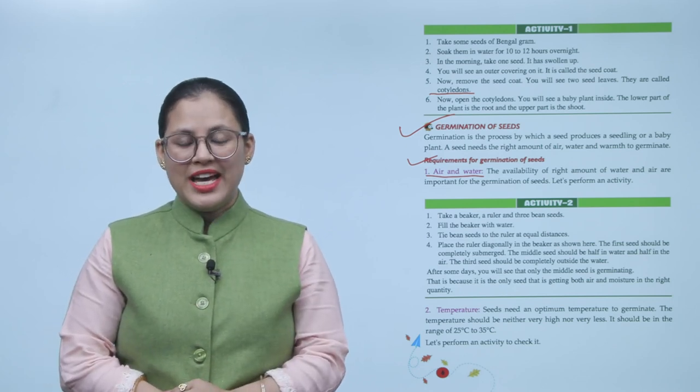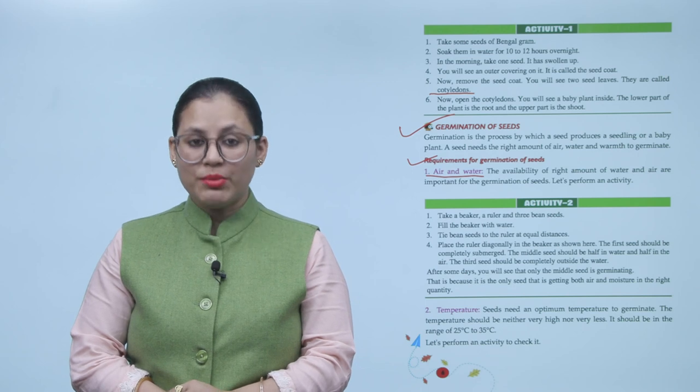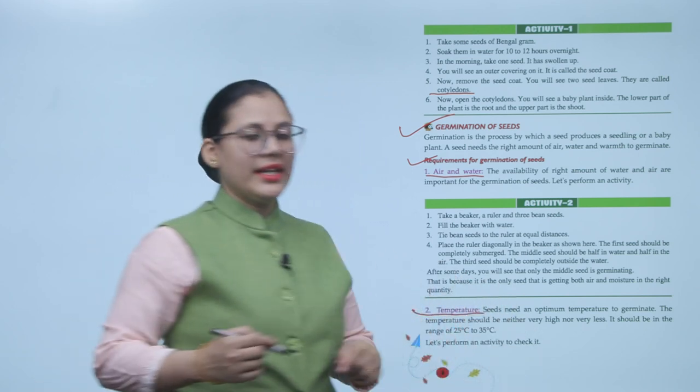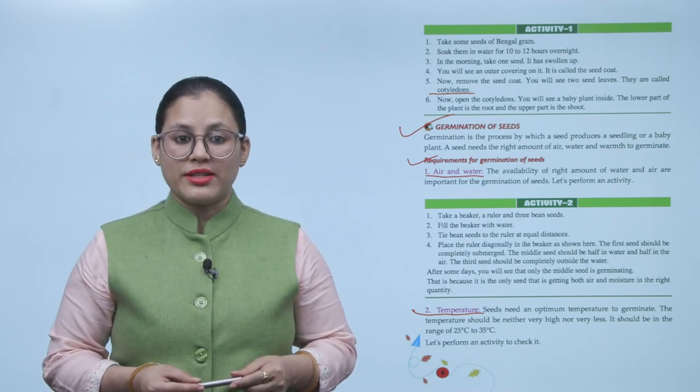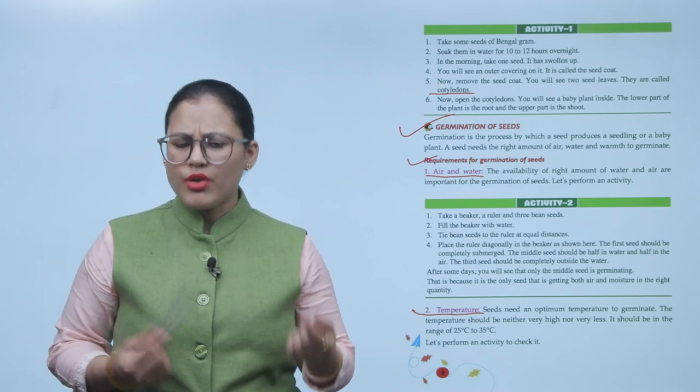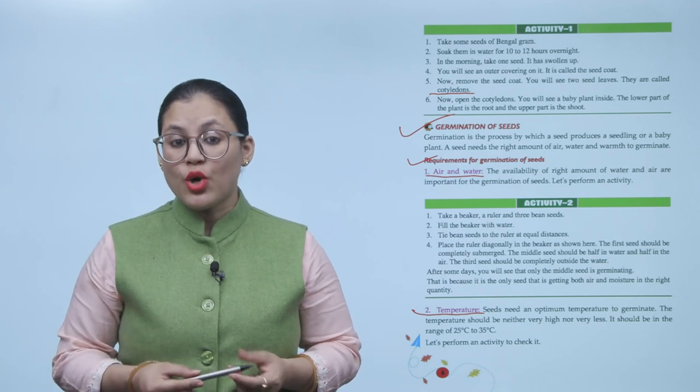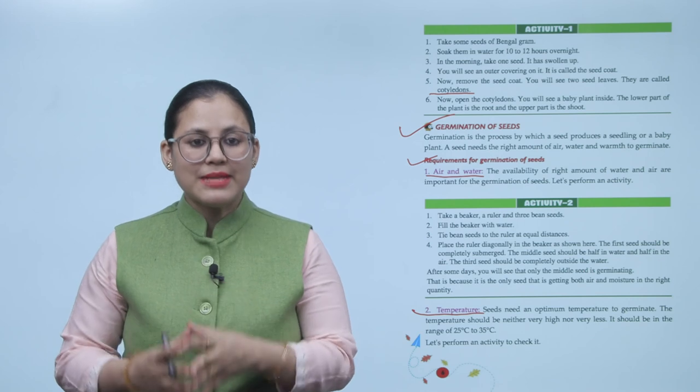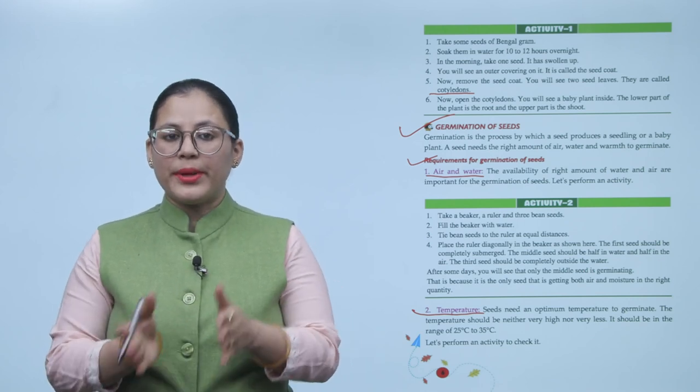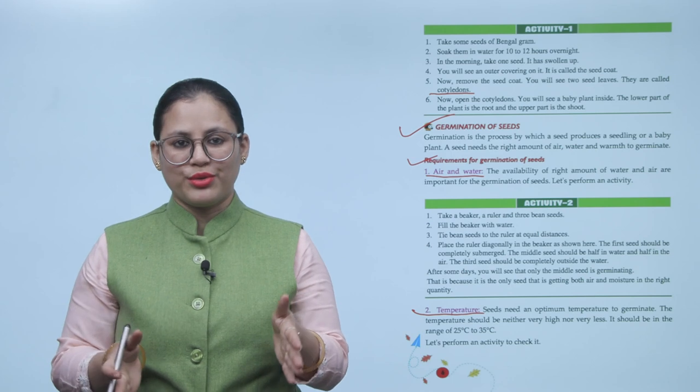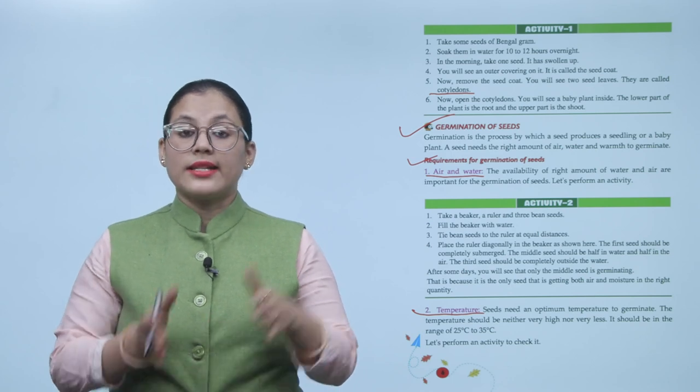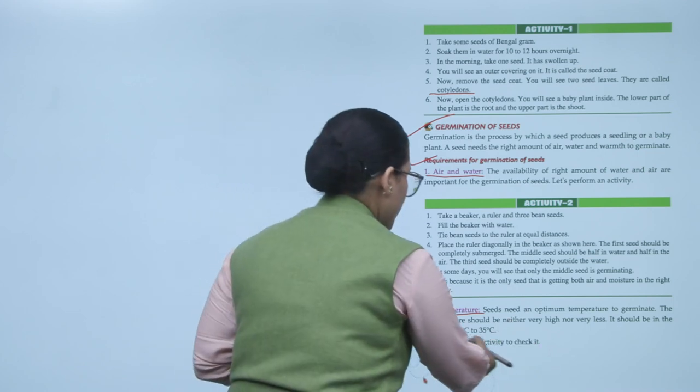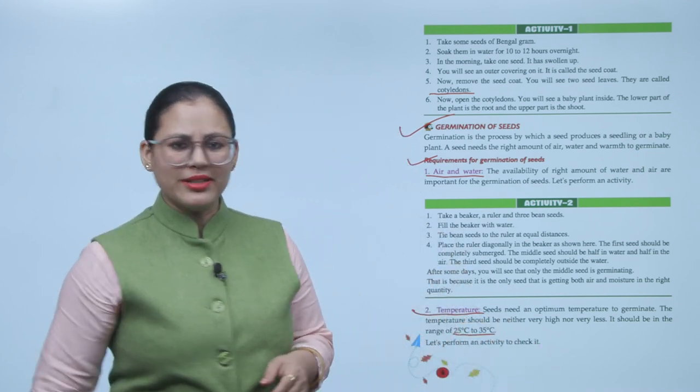Next requirement for germination is temperature. Seeds need an optimum temperature to germinate. The temperature should be neither very high nor very low. It should be in the range of 25 degrees Celsius to 35 degrees Celsius. Let us perform an activity to check it.